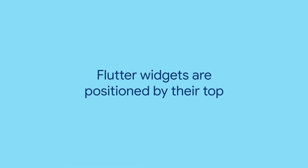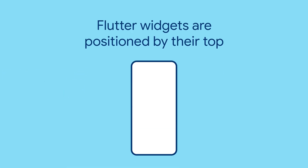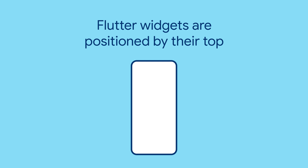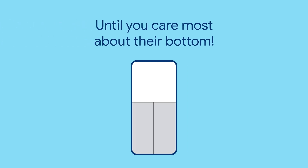In Flutter, the vertical position of a widget is a function of where its top begins and its height. That first part — where its top begins — is almost always what you want. But what if it isn't? What if you have a piece of text within a sized box whose bottom you need to align against a known position? Because the size of text is hard to predict across all platforms and devices, it's not easy to know where to place the top of your text to achieve this effect.